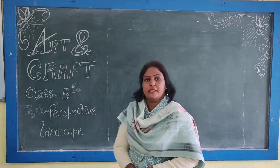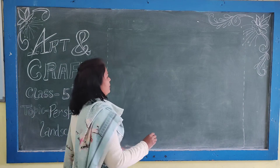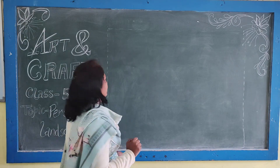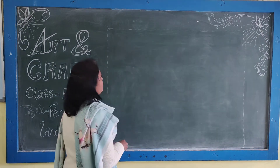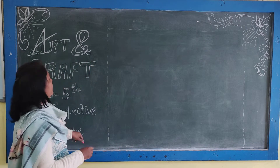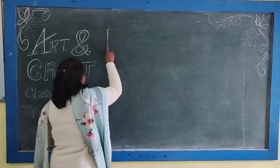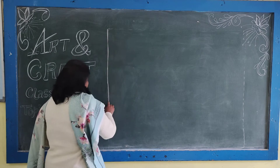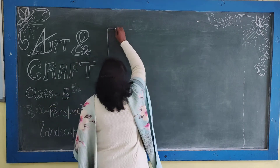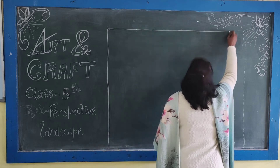In the perspective landscape, we draw one-point perspective. To draw any landscape, we will have a marginalized or borderline over shape. This is the borderline over shape.